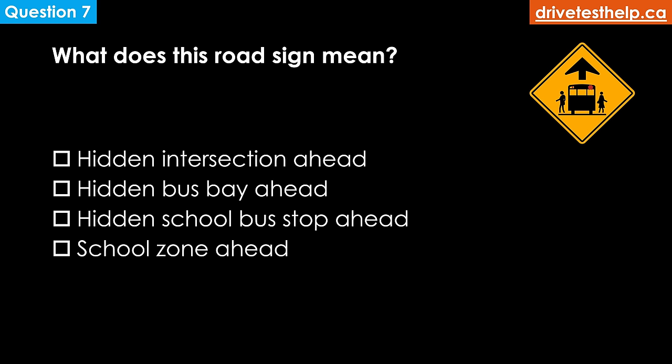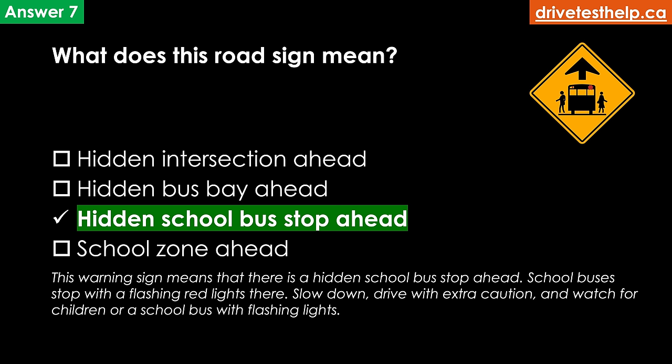What does this road sign mean? Options: hidden intersection ahead; hidden bus bay ahead; hidden school bus stop ahead; school zone ahead. The correct answer is hidden school bus stop ahead. This warning sign means that there is a hidden school bus stop ahead where school buses stop with flashing red lights. Slow down, drive with extra caution and watch for children or a school bus with flashing red lights.